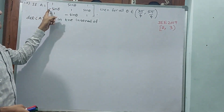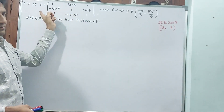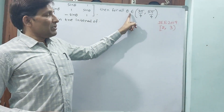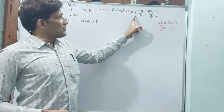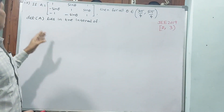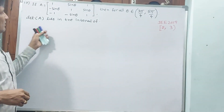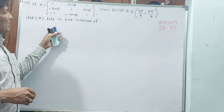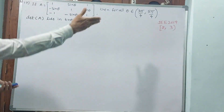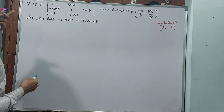If matrix A is equal to [1, −sinθ, −1; sinθ, 1, −sinθ; 1, sinθ, 1], then for all theta in the open interval (3π/4, 5π/4), determinant A lies in which interval? First, let us find the determinant, then we will see what the answer is. The answer should come out to be 2 to 3, but let me see how it will come.